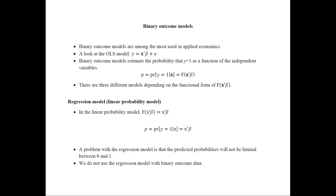Here is a look at the OLS model. We have y, the dependent variable, which is typically a continuous variable that could take values anywhere from minus infinity to infinity, equal to x prime beta plus e. Now, the binary outcome models, instead of having y as a continuous variable, model the probability that y equals 1. Because y can only take two values — 0 or 1 — we model the probability that y takes a value of 1, equal to f of x prime beta.